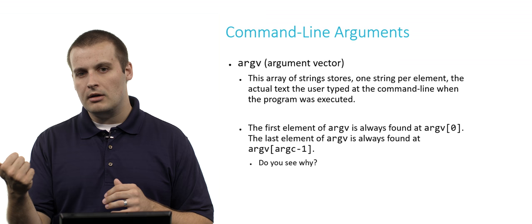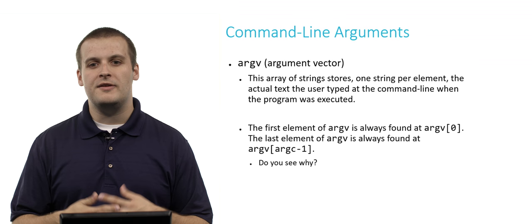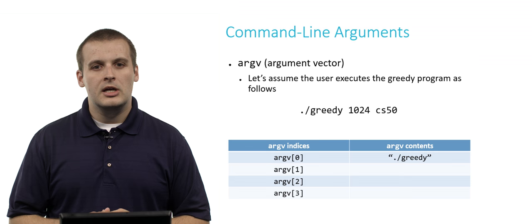If we have three elements in our array, we have an element at argv 0, an element at argv 1, and an element at argv 2. There is no element at argv 3 in an array of size 3. So that's why the last element of argv can always be found at argv square brackets argc minus 1.